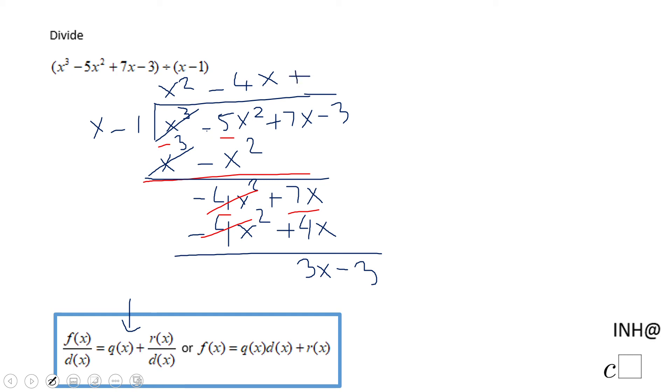That is just 3. We have positive 3 times x is positive 3x, positive 3 times negative 1 is negative 3. If we subtract this again, we get the remainder of 0. So the answer for our problem is x squared minus 4x plus 3. That's it. You don't have this term because the remainder is zero.